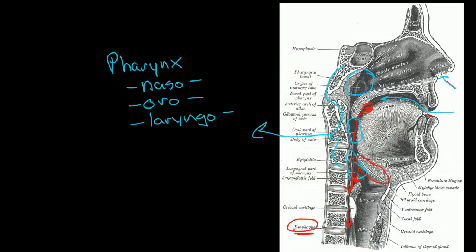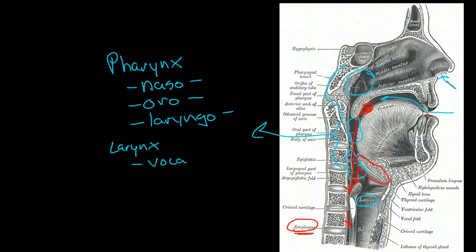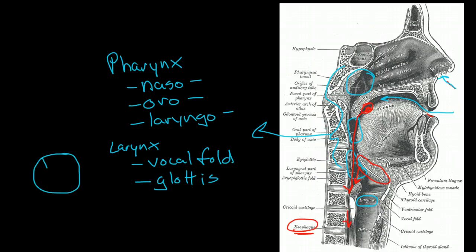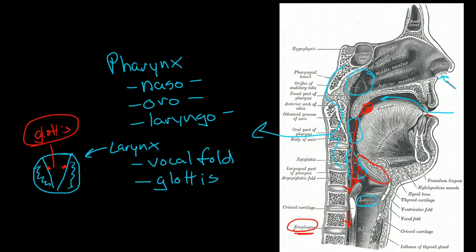Now here we have the larynx which includes the vocal folds. And the space in between the vocal folds is called the glottis. So the glottis isn't really a structure, it's a space in between the vocal folds.